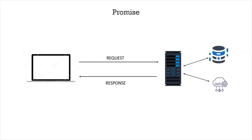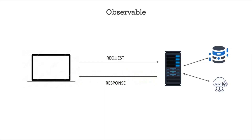Now let's see how an observable deals with asynchronous data. Again, let's say we are making an HTTP request to the server to get all users from our database. The server will collect the data from the database or web API. But remember that the observable will not wait for the complete data to be available — an observable streams the data. It will send the data in packets. When some data is available, it will send that data, then gather the rest and send it again. The observable is streaming data in chunks; it is not waiting for all the data and then sending it at once.